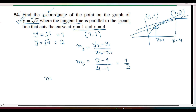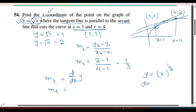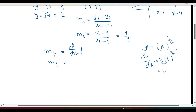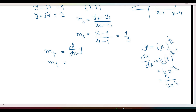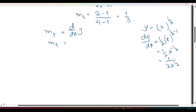The slope of the secant line and slope of the tangent line are equal because the lines are parallel. We need to find the function's derivative. The function is f(x) = square root of x, which we write as x to the power 1/2. So dy/dx equals 1/2 times x to the power negative 1/2, which simplifies to 1 divided by 2 times square root of x.